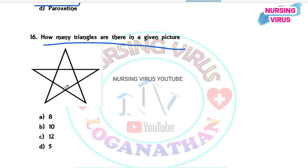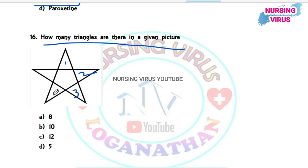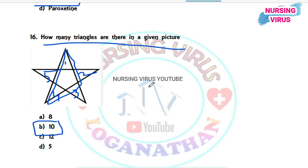Question 16 (Aptitude): How many triangles are given in the picture? The options are 8, 10, 12, and 5. Calculating the triangles on the surrounding sides gives five triangles, and the inner formations yield another five triangles, giving a total of ten triangles. The correct answer is 10.